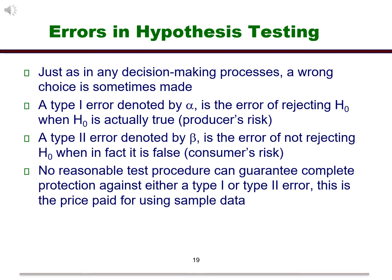The other error is a type 2 error, denoted by beta. This is the error that occurs when you fail to reject a hypothesis that is false. This is considered the consumer's risk. It is the risk of thinking a part is good when it actually isn't.